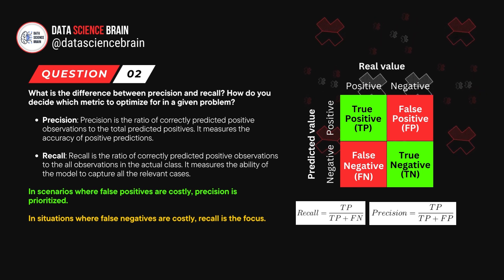The choice between precision and recall depends on the problem. In scenarios where false positives are costly, precision is prioritized. In situations where false negatives are costly, recall is the focus.